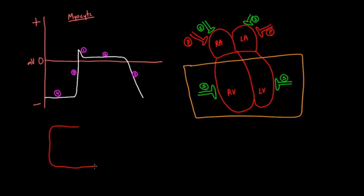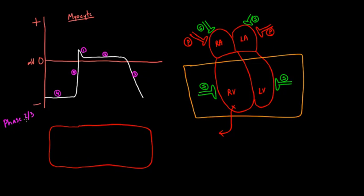I'm going to draw a ventricular muscle cell and focus specifically on what happens in phase two and three. In phase two, the ventricular cell has voltage-gated potassium channels letting potassium out, and voltage-gated calcium channels letting calcium in.